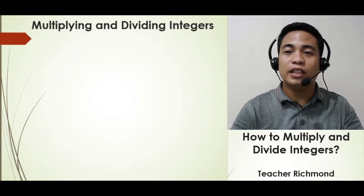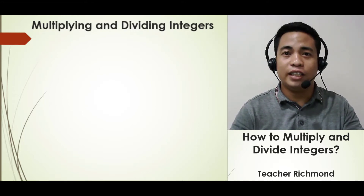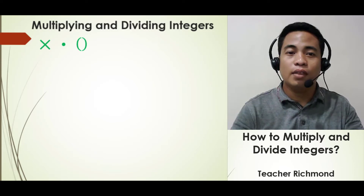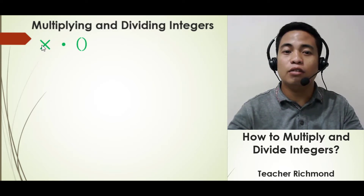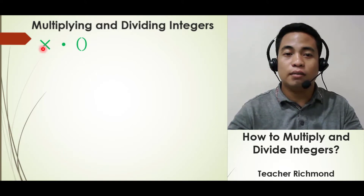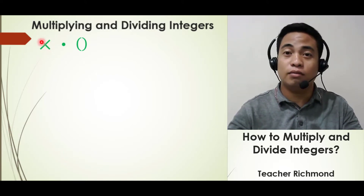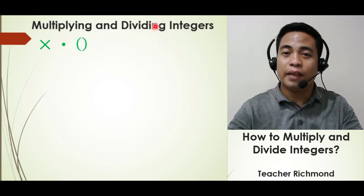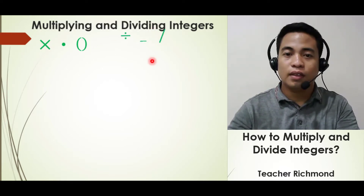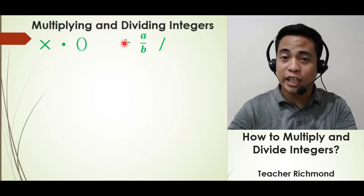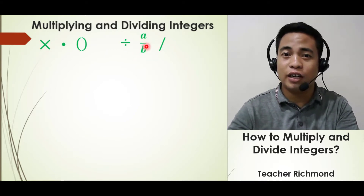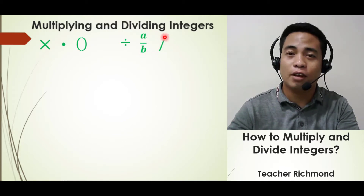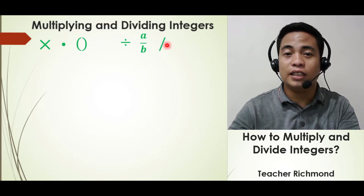We will look at the rules in multiplying and dividing integers. By the way, multiplication is sometimes denoted as a multiplication sign that looks like x, or sometimes as a center dot, or sometimes as parentheses. And the same with division — sometimes it is denoted with a division sign, or it looks like a fraction with a numerator and a denominator, or sometimes it is denoted as a slash.